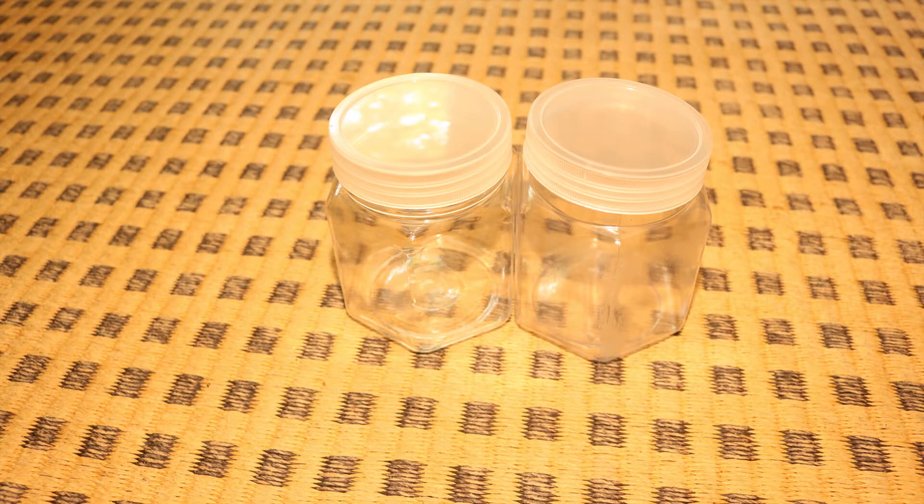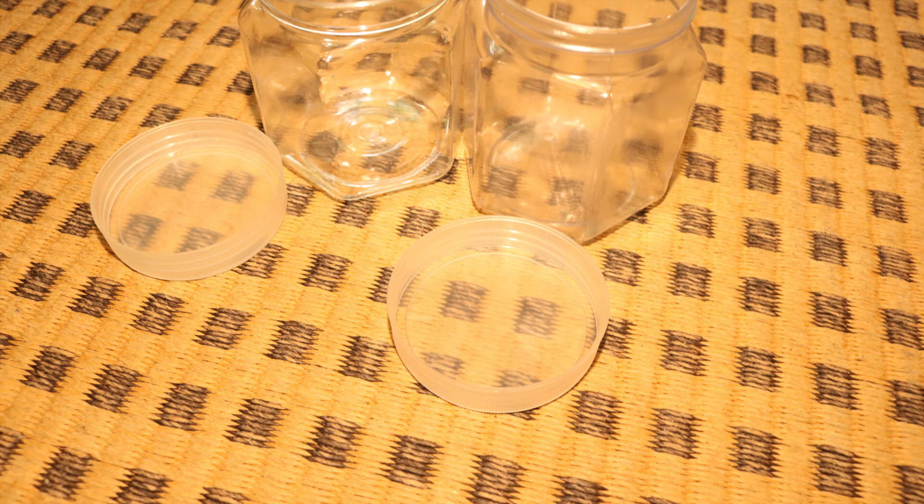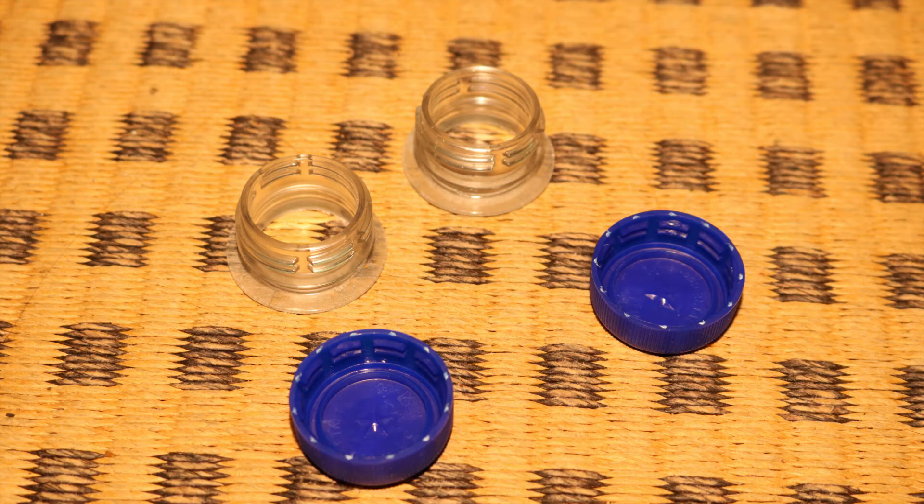For the hydrogen generator I use these plastic containers because they have screw lids and flat sides to connect them together. However, I found out that the lids are not tight so I decided to glue them shut and use separate screw lids for the electrodes.